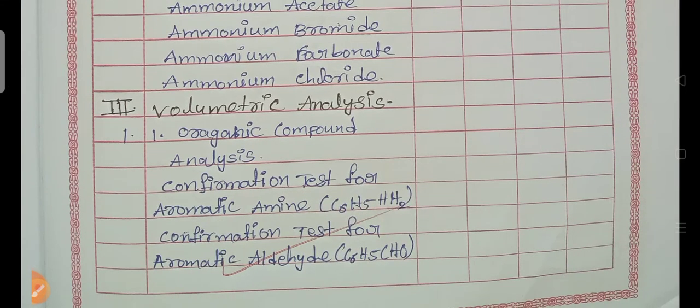Next third one is the volumetric analysis, organic compound analysis, confirmation test for the aromatic amine, confirmation test for the aromatic aldehyde. So this is the index first page in chemistry for the second years.